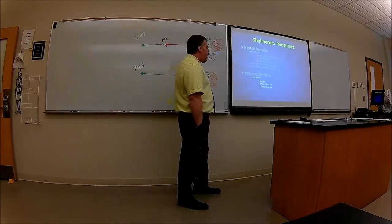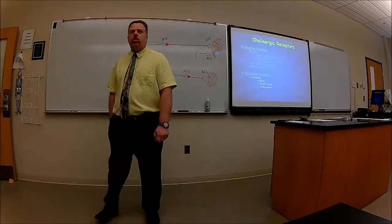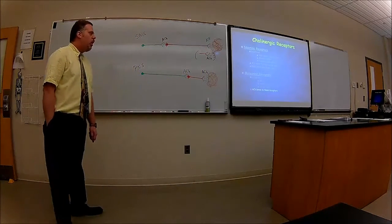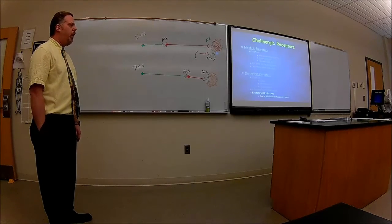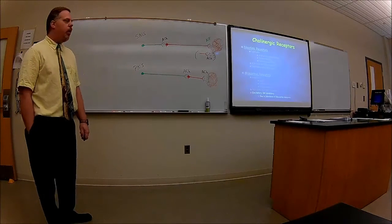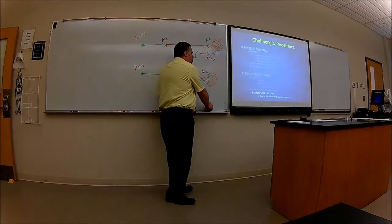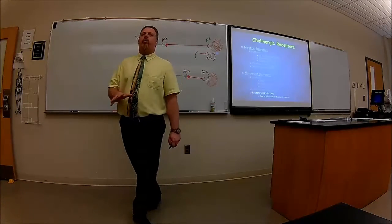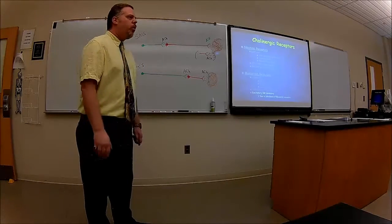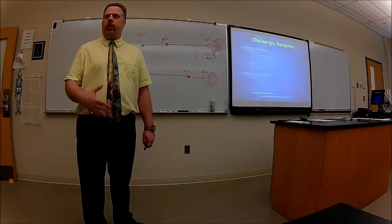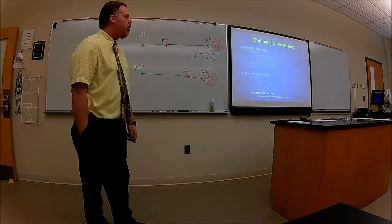Muscarinic receptors are located at glands, smooth muscles, and cardiac muscles. Acetylcholine binds to these, and depending on the subclass of muscarinic receptor, they can be either excitatory or inhibitory. I'm not going through the subclasses — that's a whole pharmacology course — but at least you're getting introduced to what muscarinic versus nicotinic are about.